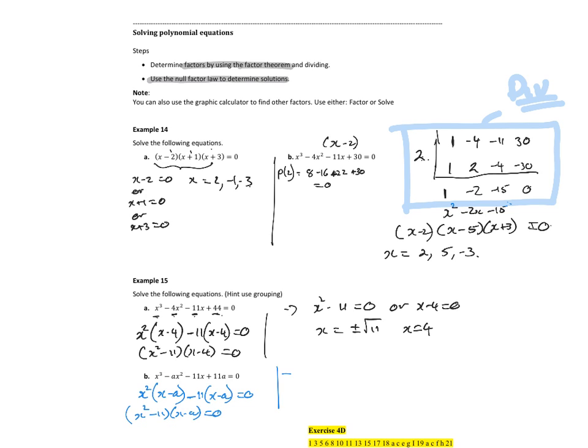So again, x squared minus 11 is equal to 0, or x minus a is equal to 0, x is equal to plus or minus the square root of 11, or x is equal to a. Give it a go.